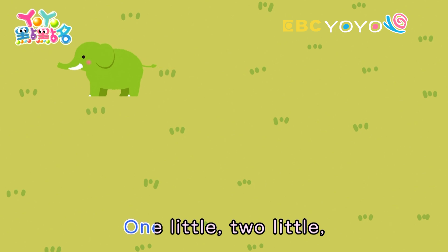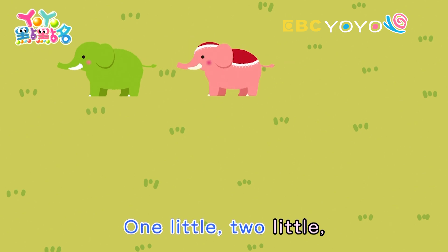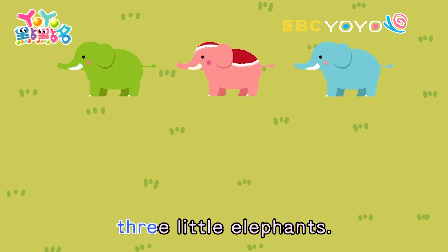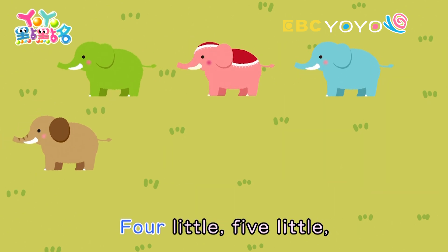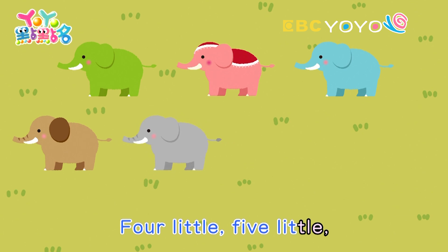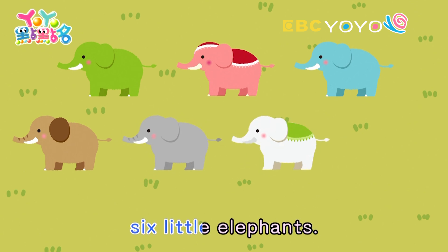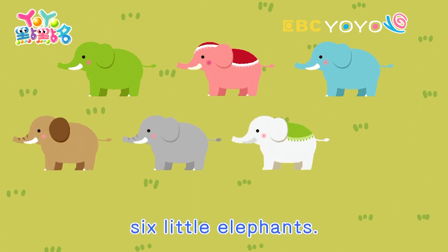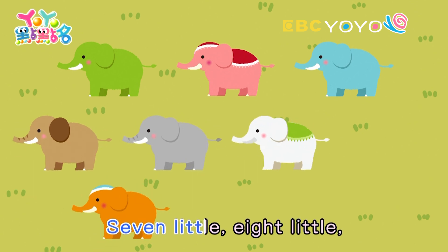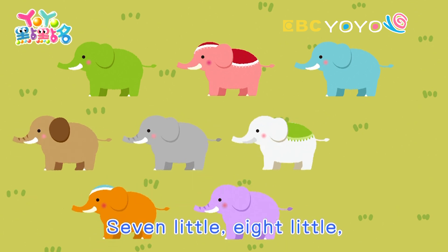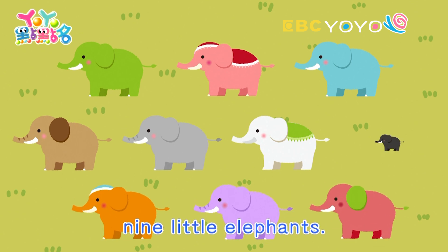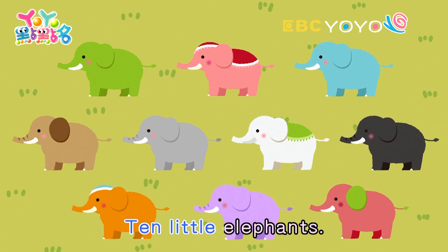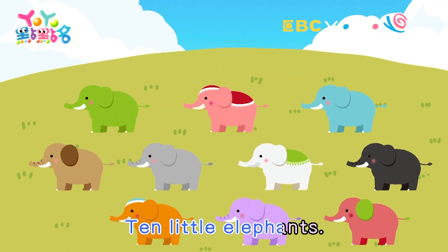One little, two little, three little elephants. Four little, five little, six little elephants. Seven little, eight little, nine little elephants. Ten little elephants.